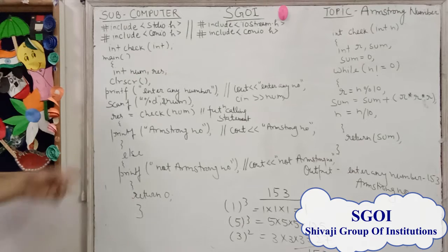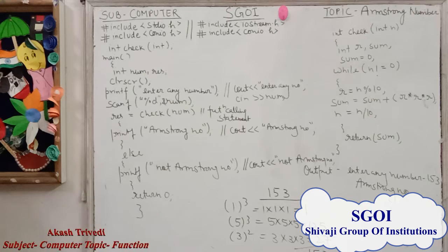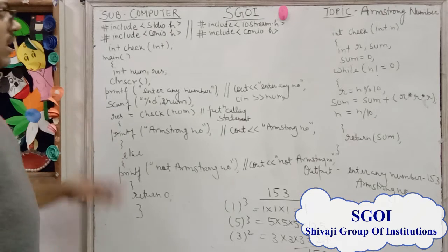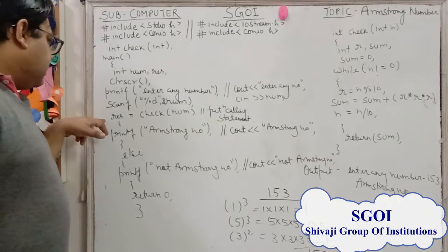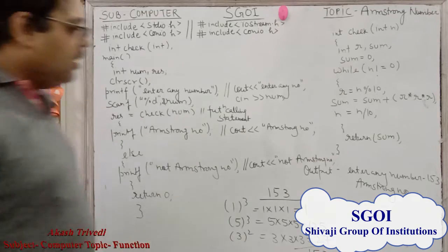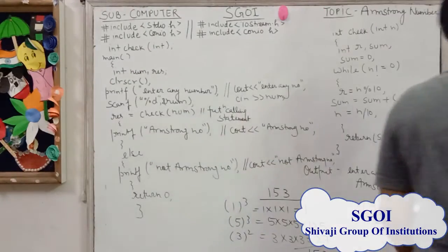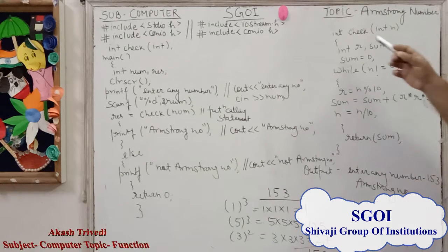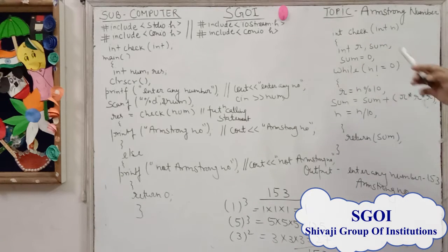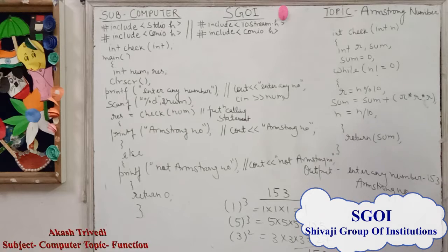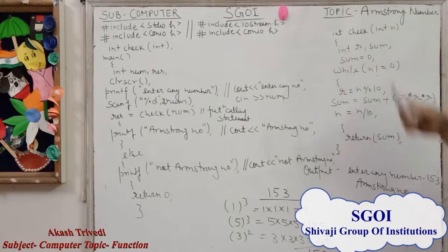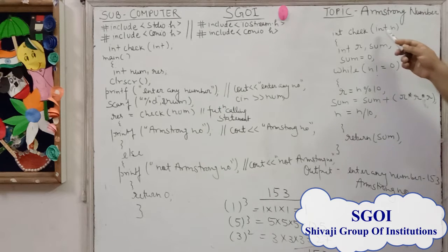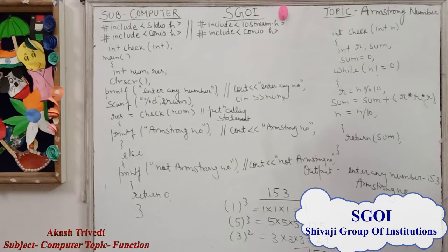After that, res equals check(num), which is the function calling statement. It calls the function check, and using this statement we go to the function definition. Here we write the function definition with data type int, function name check, and the argument int m.